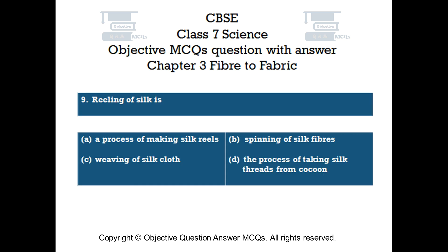Question number 9. Reeling of silk is: Option A A process of making silk reels, Option B Spinning of silk fibers, Option C Weaving of silk cloth, Option D The process of taking silk threads from cocoon.